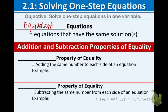We're going to be looking at four different properties of equality. The first one is the addition property. Using this property, you add the same number to both sides. Remember, you have to apply it to both sides of the equation — if you add one to the first side, you have to add one to the second side.